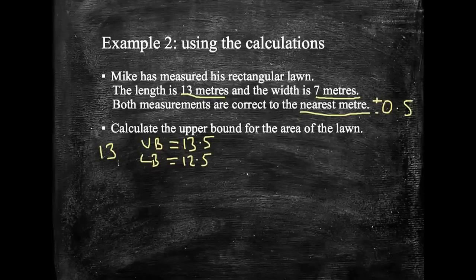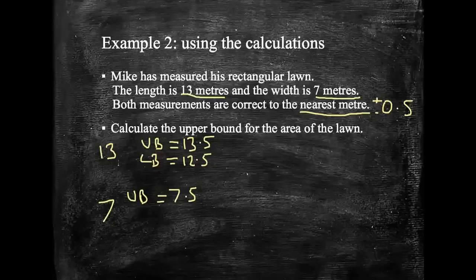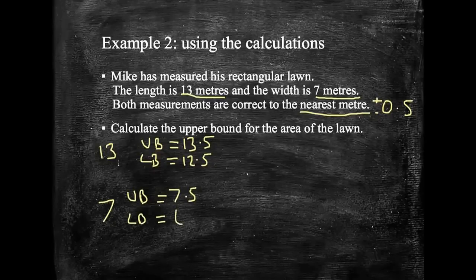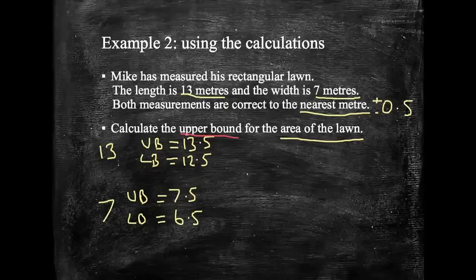Next, we need to look at the width. That was 7. So its upper bound would be 7.5, and the lower bound would be 6.5. Now the question says, calculate the upper bound for the area of the lawn. We're looking for the upper bound.